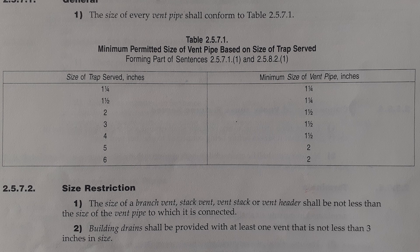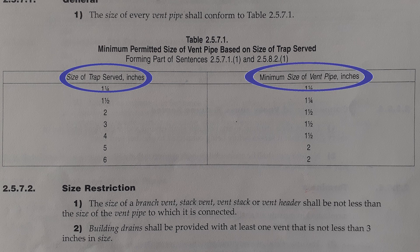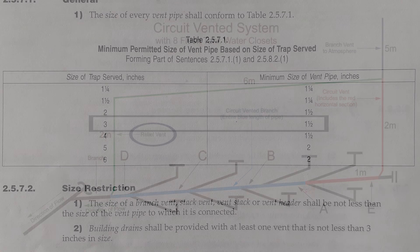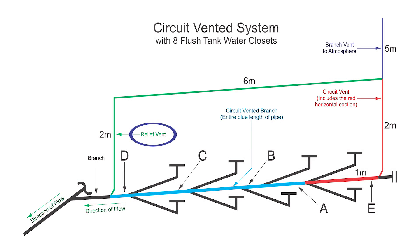Table 2-5-7-1 is a very important table used for all vents. It looks at the size of trap being served and gives a minimum vent size. In this example we have 3-inch water closet traps, so we need a minimum of 1-and-a-half-inch vent. Therefore the relief vent needs to be a minimum of 1-and-a-half inches.